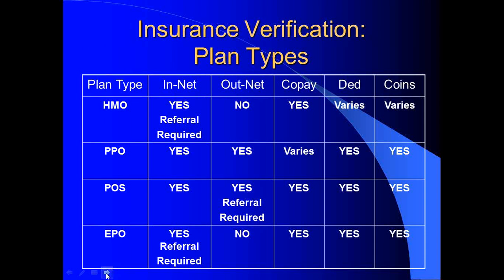The PPO and POS benefits both have out-of-network benefits available. The POS may require referrals because it allows patients to elect either HMO or PPO coverage. The EPO, or exclusive provider organization, is typically sold to young, healthy people — I see it most with students. It requires very strict referrals and specialist care is typically not covered. It's considered more of a catastrophic plan covering emergencies or hospitalization, but not routine visits or outpatient surgery.